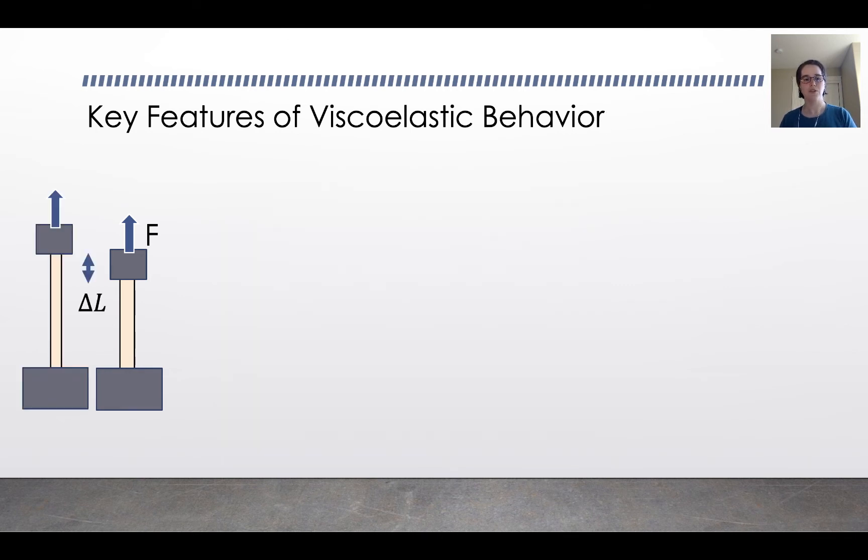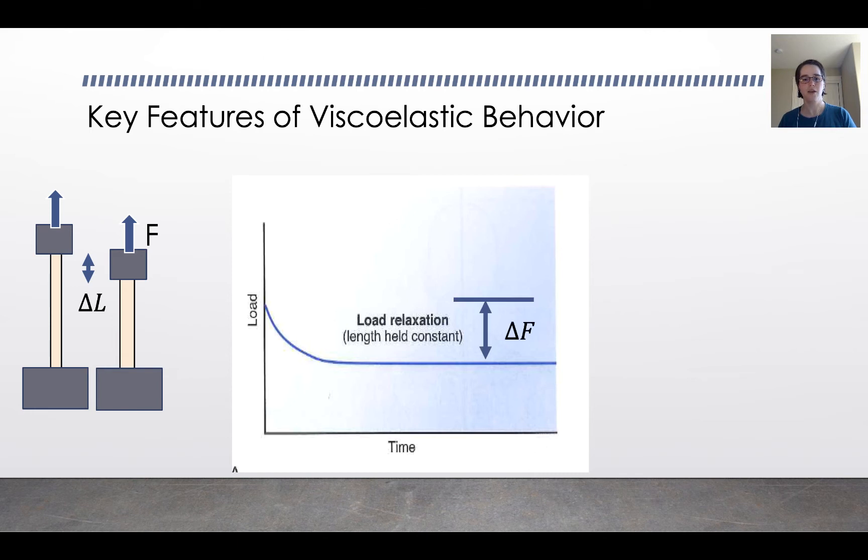Then there's what happens when you apply a set change in length to the tendon, shown there, and measure the force over time as you hold the length constant. If you do that, you'll notice that the load drops off. There's a change in force over time. And this is called load relaxation, where you're holding the displacement constant and you observe a drop in force as a result.